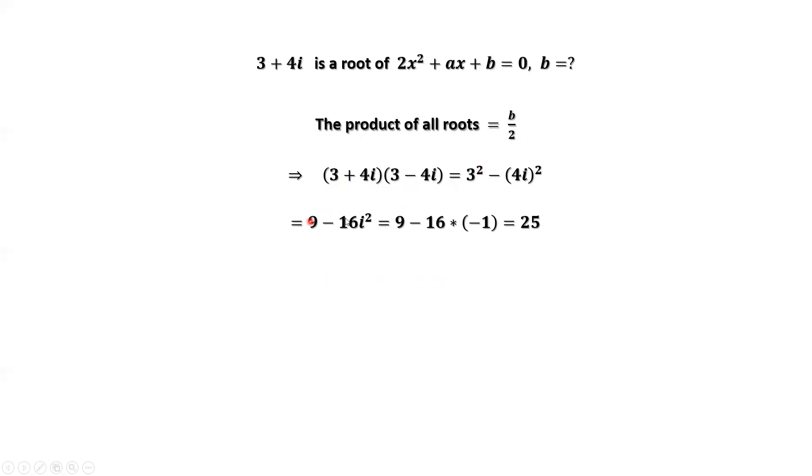3 squared is 9. 4i squared is 16 times i squared. i squared equals negative 1. This is 25.